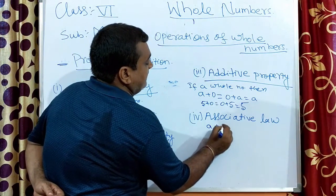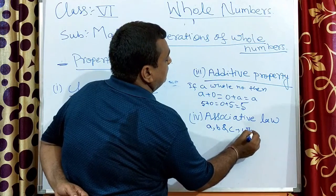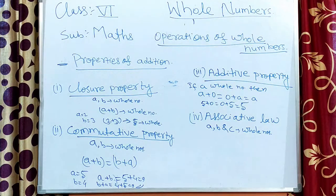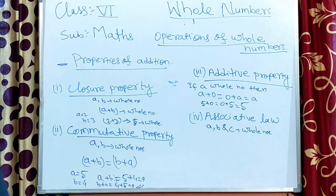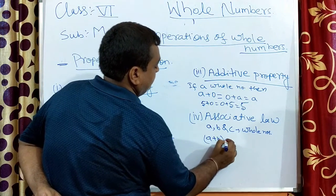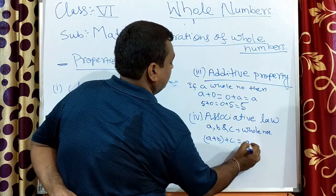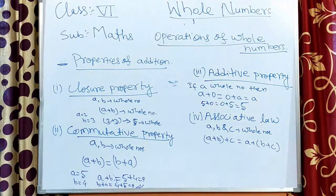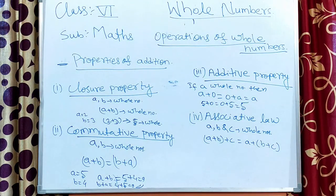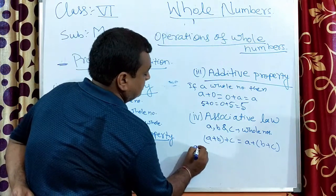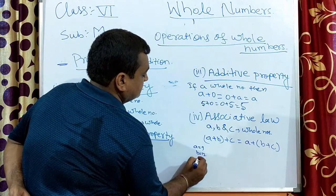Next is the associative law. If a, b, and c are whole numbers, then according to the associative property we can write: (a plus b) plus c equals a plus (b plus c).